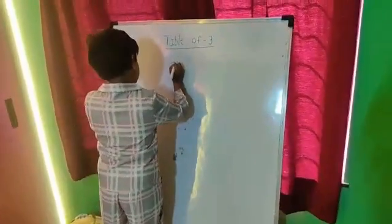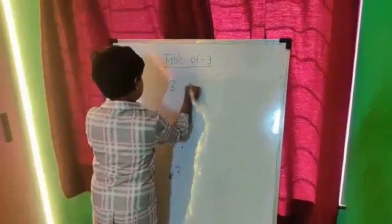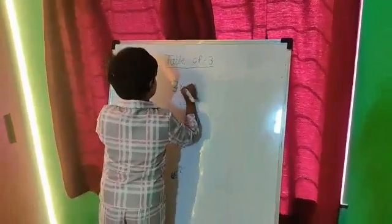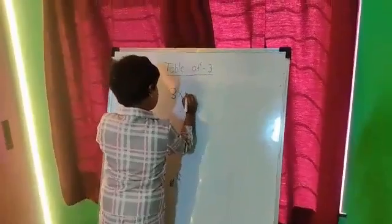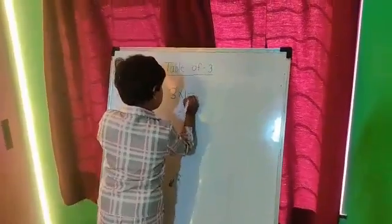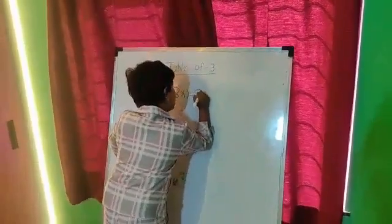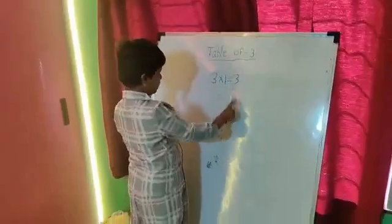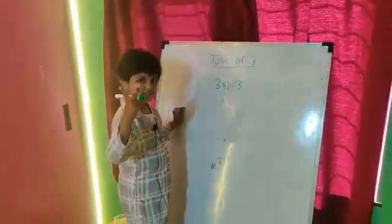Look. 3 multiplied by 1 equals 3. This is 3, and 2 times 3.